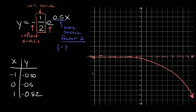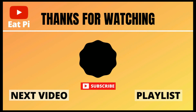Our asymptote is on the x-axis. The domain is always all real numbers, and the range in this case goes from zero down to negative infinity — so we write zero to negative infinity. If you found the video helpful, definitely leave a thumbs up, and if you have any other questions or want to see any other examples, just let me know in the comment section below.